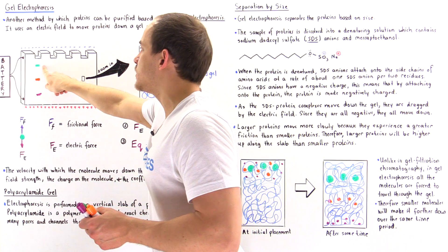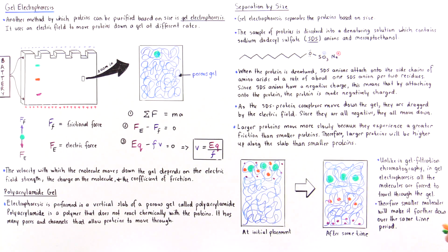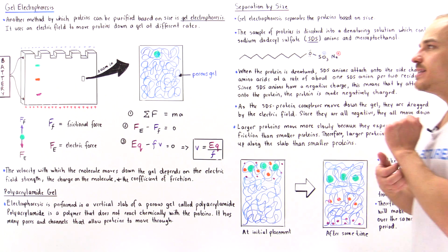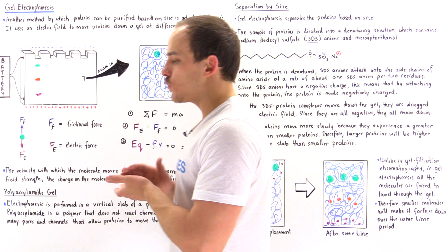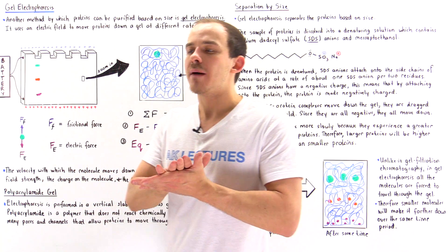So we have the large proteins, intermediate, and the small proteins. Now the final question is, what is the difference between gel electrophoresis and gel filtration chromatography?